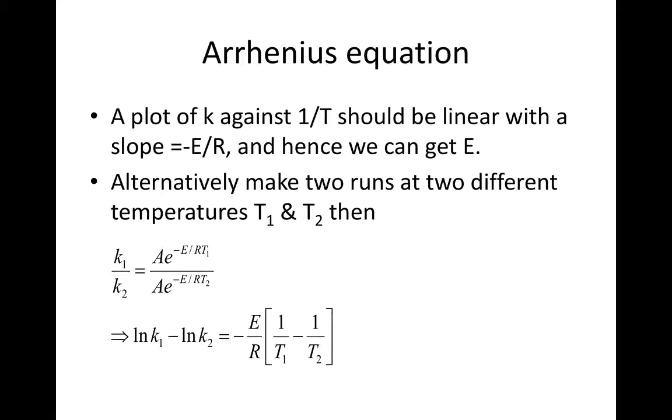Alternatively, as we have done always before, make two runs at two different temperatures T1 and T2. Then by dividing K1 over K2, which is equal to A e to the minus E over RT1 over A e to the minus E over RT2.